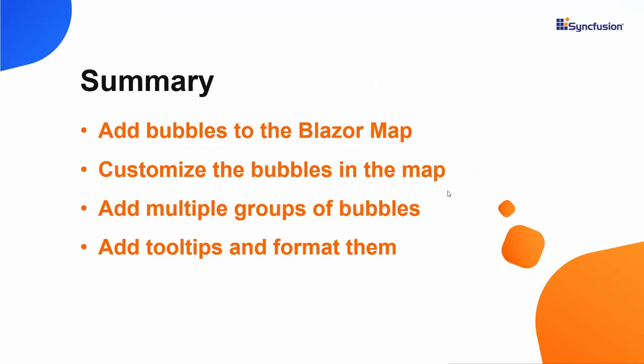In this video, we have seen how to add bubbles to the Blazor Maps component and change the bubble type. We also saw how to customize the bubbles and add multiple groups of bubbles to the maps. Finally, we have seen how to add tooltips and format them. If you would like to see a working example of the map in this video, you can download it from the GitHub link in the description below. I have also provided a link in the description where you can see if you qualify for a free license key to use our Blazor products through our community license. If you found this video useful, don't forget to click the like button and subscribe to our channel to watch more videos like this. Thanks for watching.